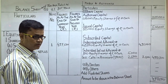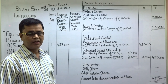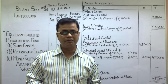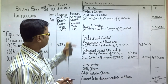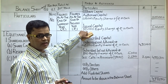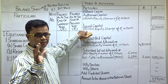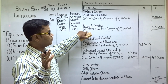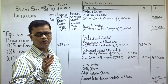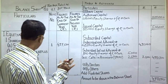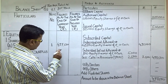Reserve and surplus में क्या आएगा — securities premium। Company ने 50,000 shares पर 5 रुपए premium लगाया — तो 50,000 into 5 = 2,50,000। यहां reserve and surplus में securities premium 2,50,000 रुपए आएगा। यानि premium money reserve and surplus में जाता है — यह 2,50,000 दिखेगा।